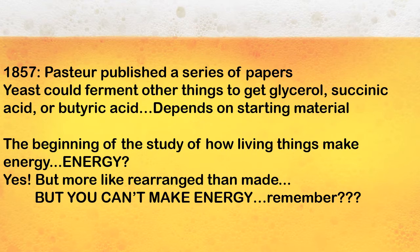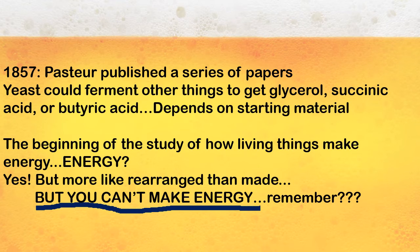All this work in the mid-1800s is really the beginning of the study of how energy can be produced from living things. You can't make energy — you can rearrange molecules and rearrange energy, but you can't make energy. That's really what we're talking about: taking something like sugar and turning it into something like ethanol. You can burn both sugar and ethanol, but there are some other things going on that change the energy, so we're rearranging molecules to get energy sources out of them.